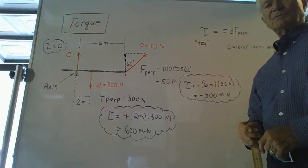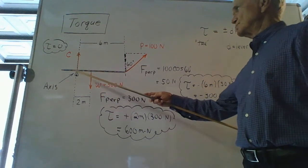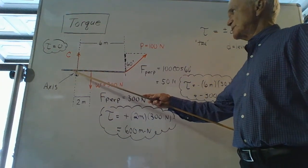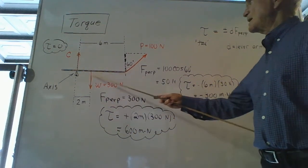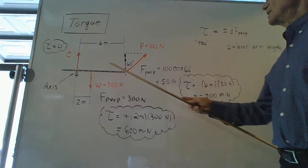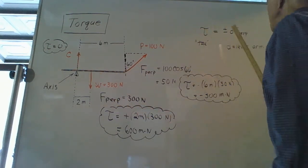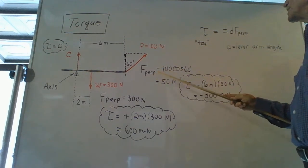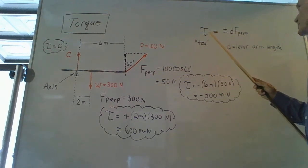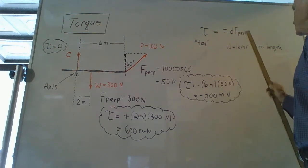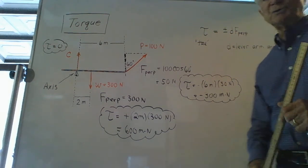Let's review what I've told you. I've discussed axes of rotation — in this case, a fulcrum — points of application of forces, lever arms, lever arm length symbolized as D, perpendicular parts of forces, and finally the equation for the torque of a particular force, measured in meter-newton units.